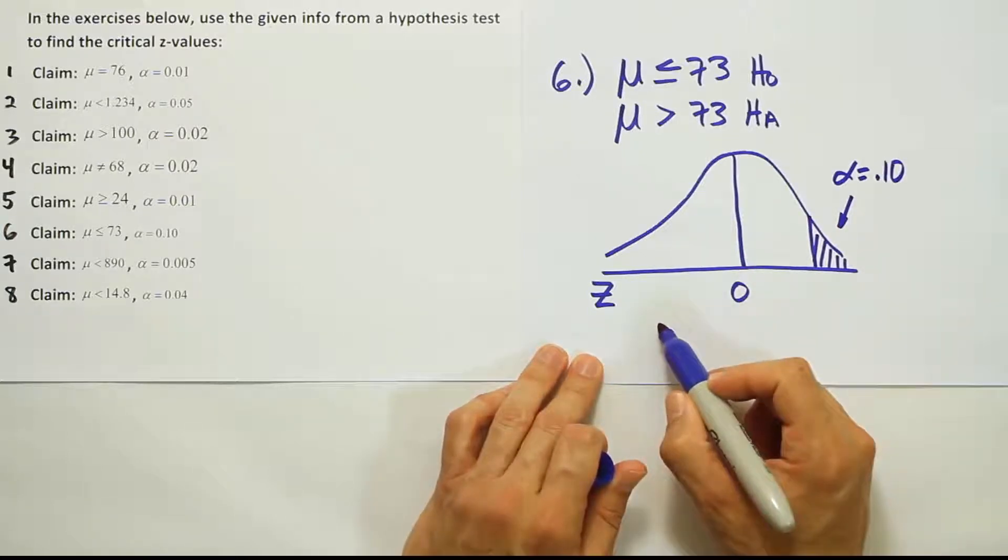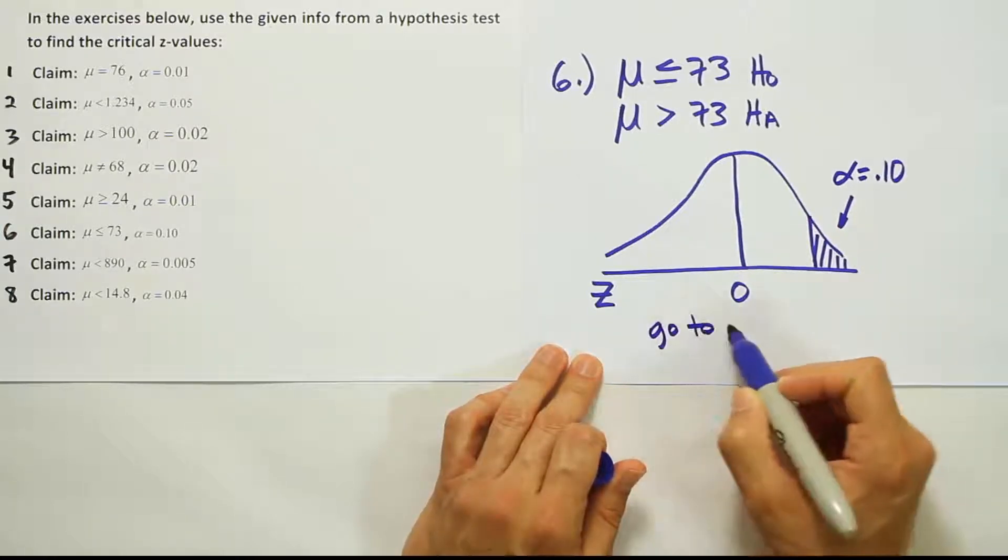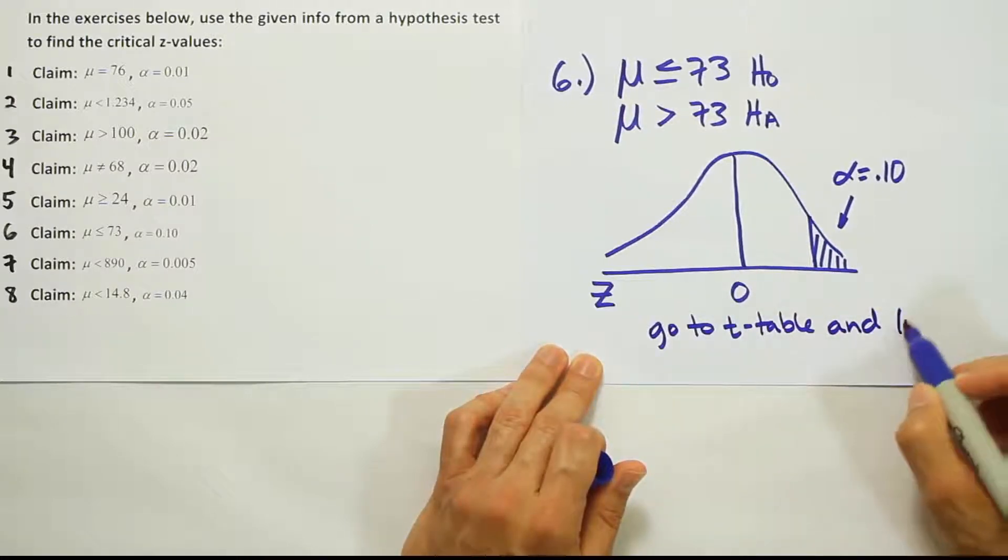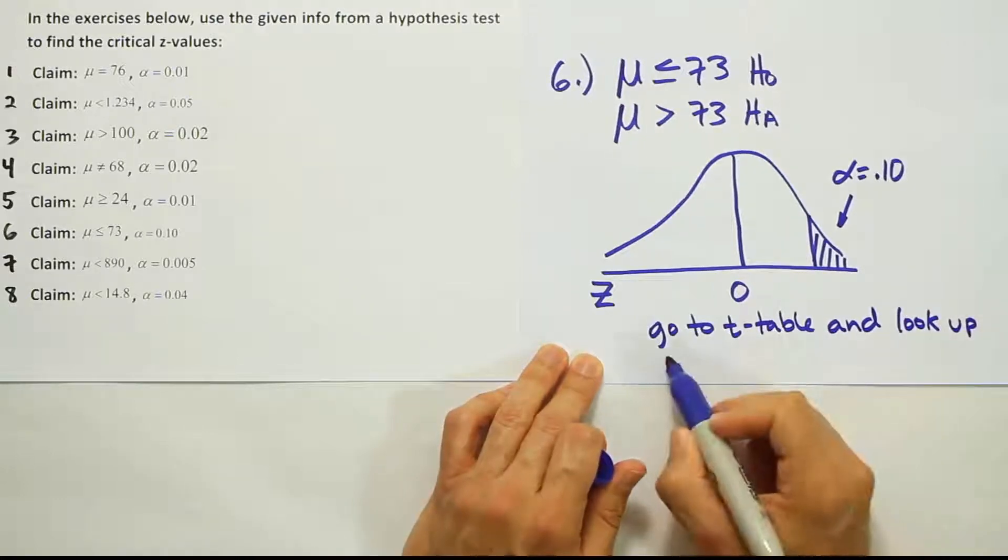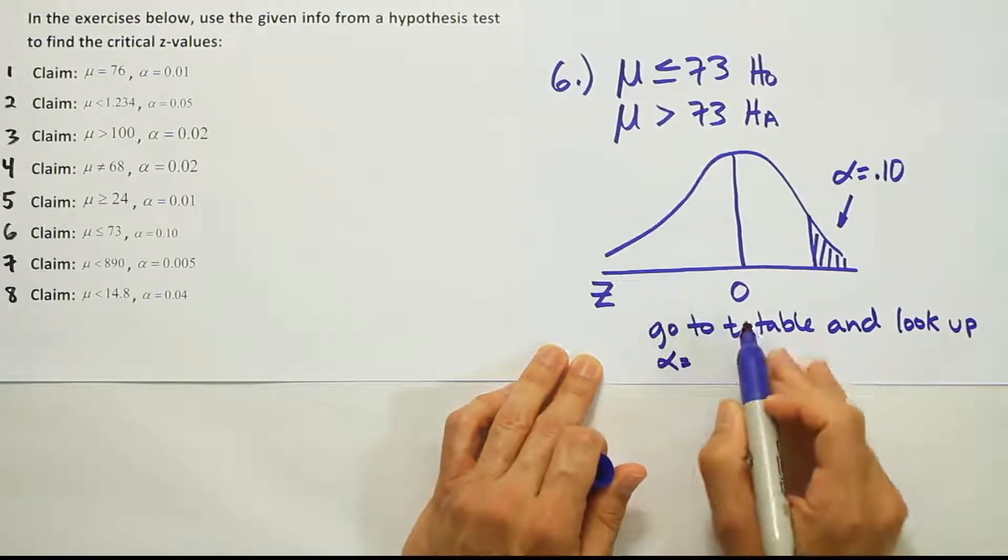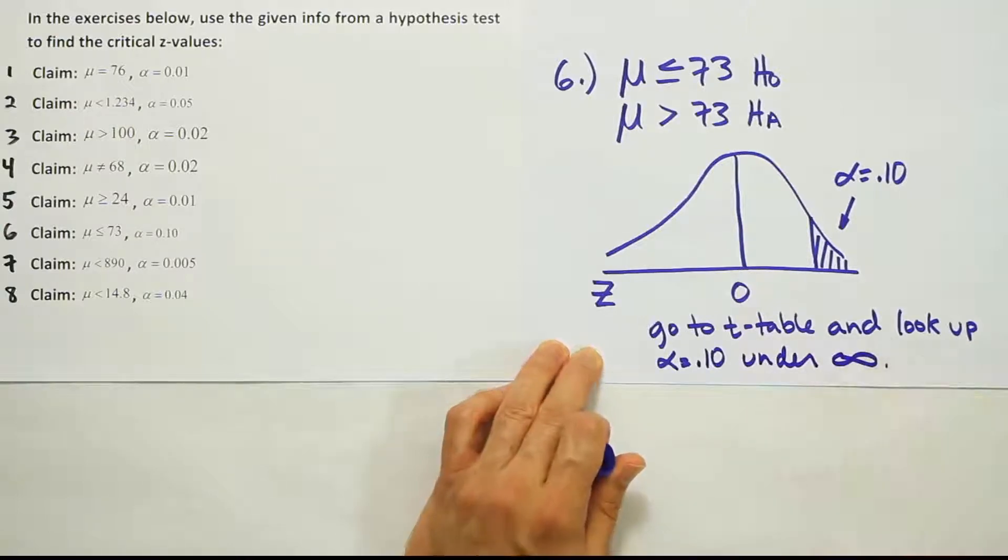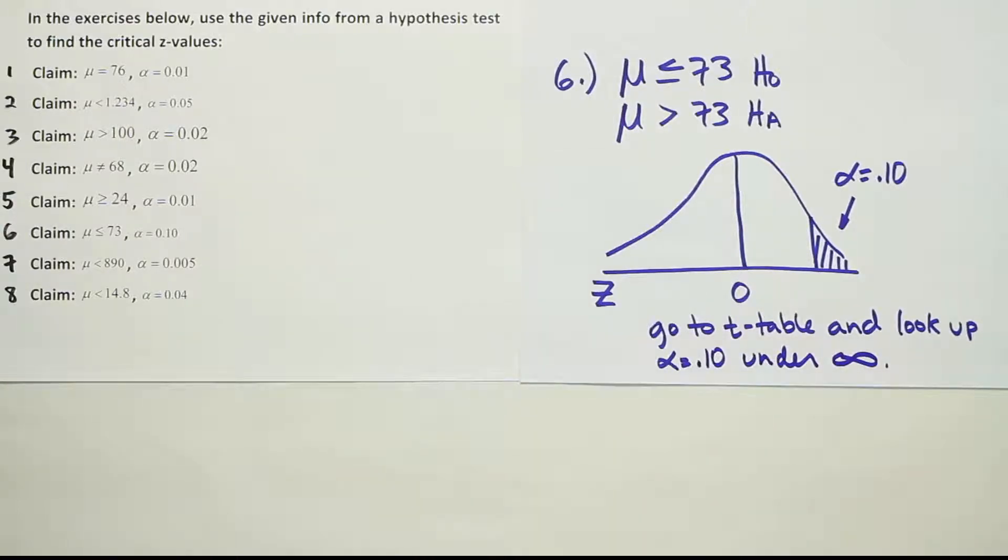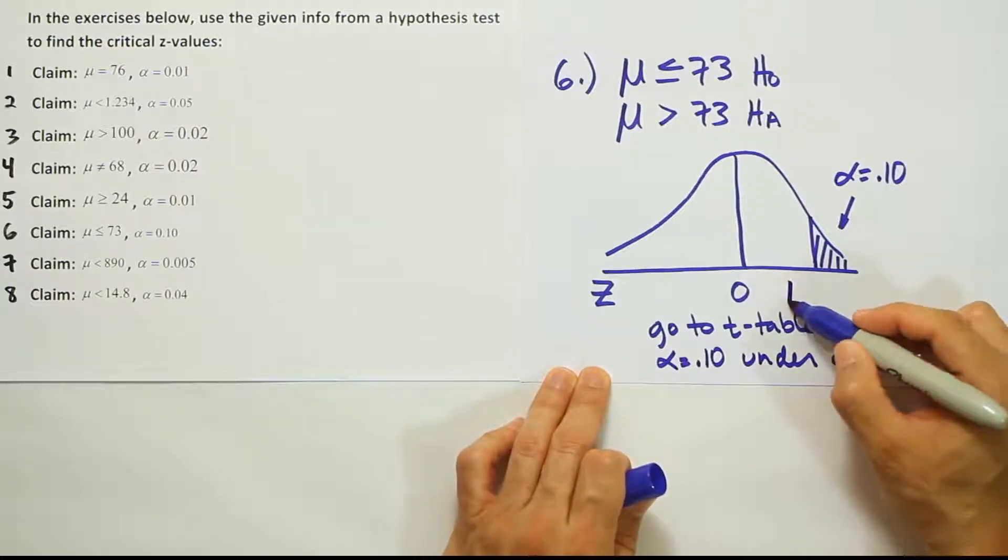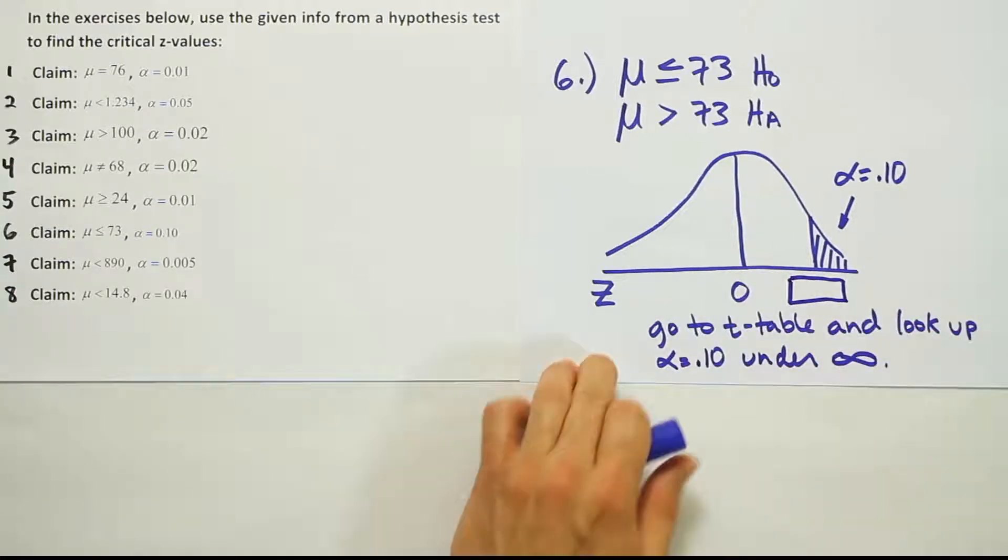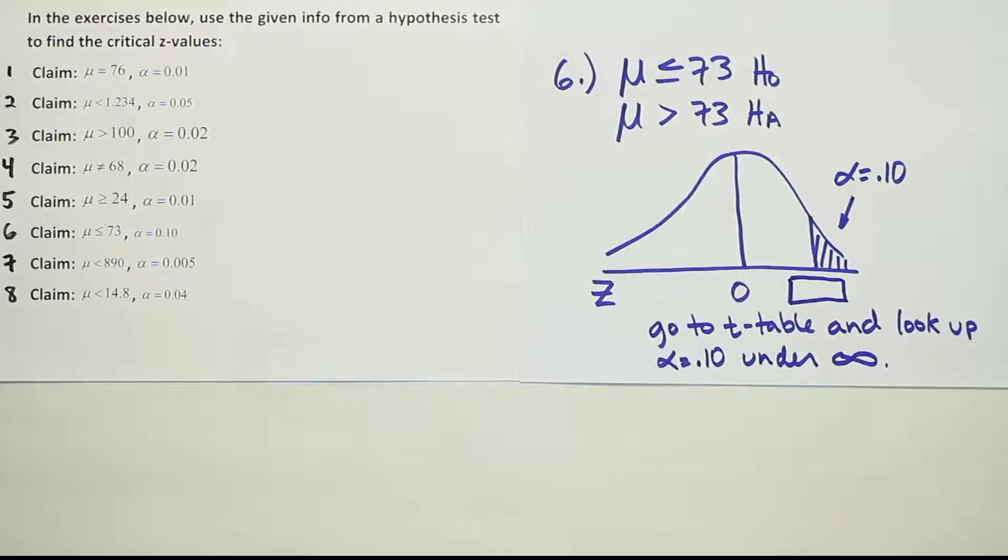So what we're going to do is go to our t-table and look up alpha equals 10% under infinity, right? Because infinity is where we keep the z-scores on the t-table. Remember that we just look up alpha because we have a one-tailed test. If it was a two-tailed test, we'd look up alpha divided by two, but in this case we just look up alpha. Let's go to our t-table now and do that.